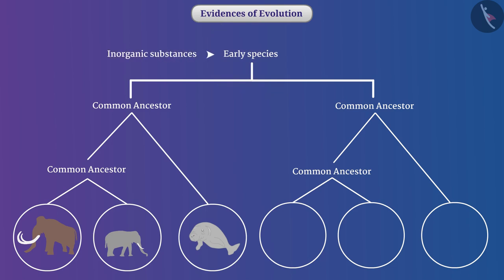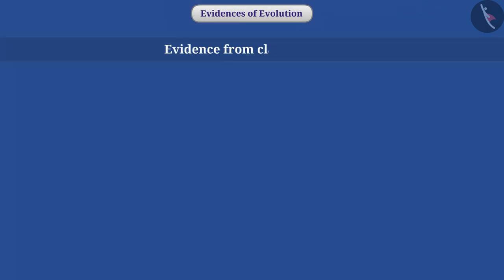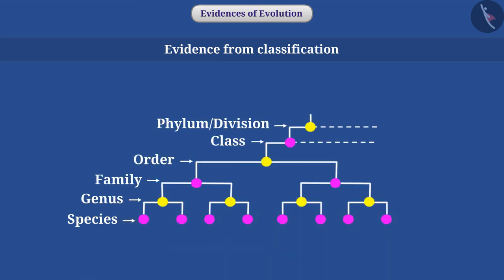Evidence from classification: There are many species of plants and animals on earth. If we classify them on the basis of natural similarities and differences — for example, kingdom, phylum or division, class, order, family, genus and species — then we get the idea of how various groups would have evolved.